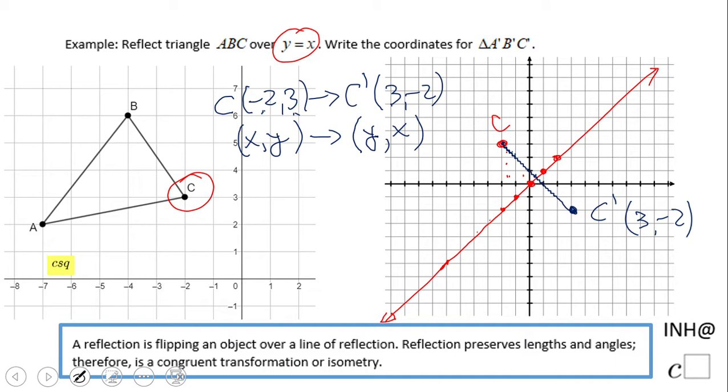Okay? So, basically, now we can do the other points. Let's turn to A, which is negative 7 and 2. That will become A prime. X and Y switch. So, it's going to be 2 and negative 7.